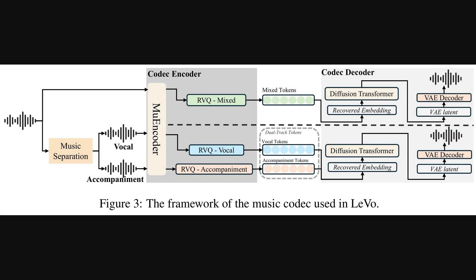This figure shows the music codec, which is the component that turns audio into tokens for training, and then turns the model's generated tokens back into a song. On the left, the encoder uses a method called residual vector quantization, a way of compressing complex audio into a simpler, tokenized format. Then on the right, the decoder uses a diffusion transformer to reconstruct the audio — this powerful generator starts with noise and gradually refines it into a detailed representation, which a final variational auto-encoder decoder then converts into the high-fidelity audio waveform.